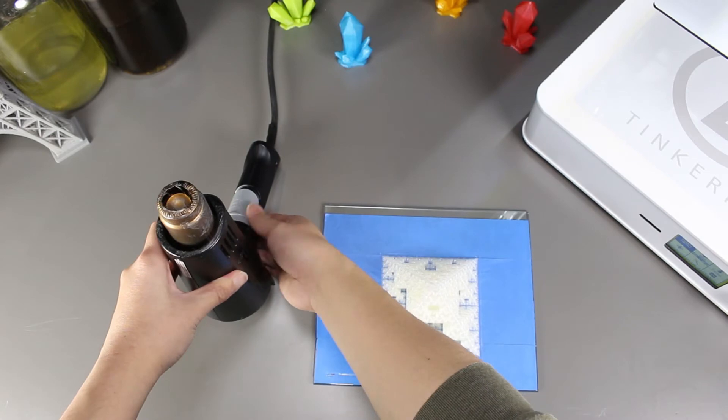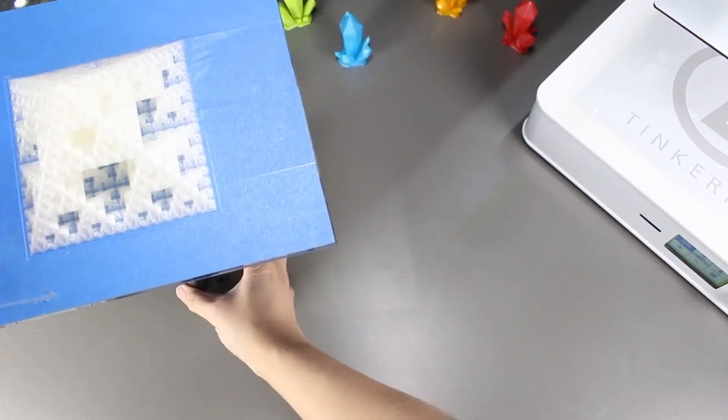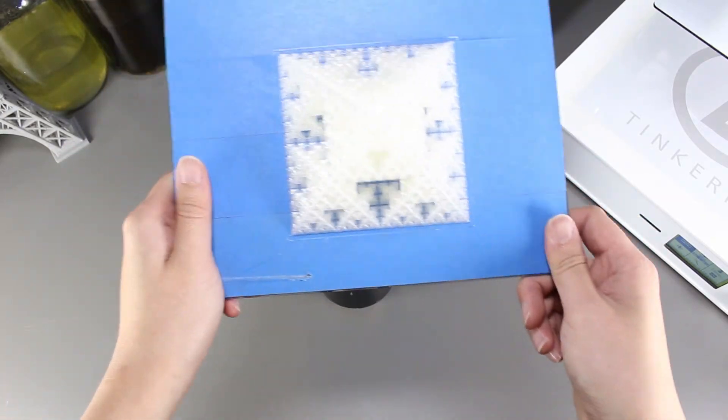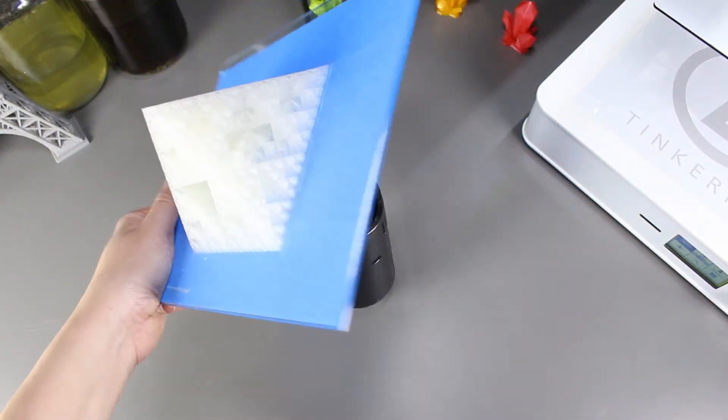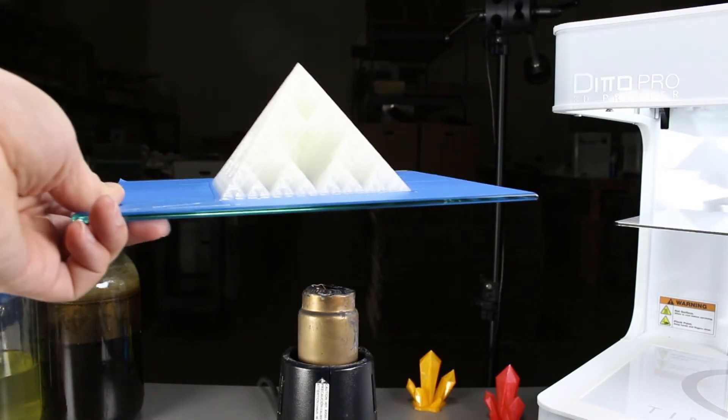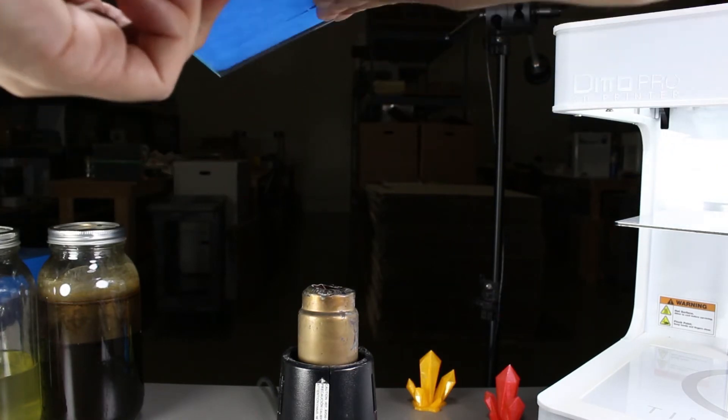We'll start heating it up slowly with the high settings with the heat gun. We'll keep it there until the bottom of the glass starts to get warm to hot. Once we reach there, we'll immediately move to removing the print.